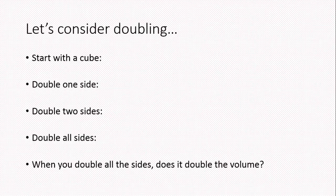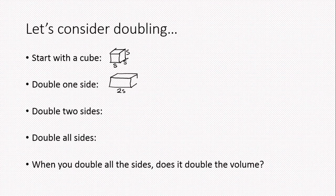If you start with a cube, it only has one measurement, but it's the same everywhere. So we've got this side times this side making the base, and the height is the same. What happens if I double one of those? Now it looks more like a rectangular prism with two s on the bottom, but the other measurements are still s — the depth is still s, the height is still s.